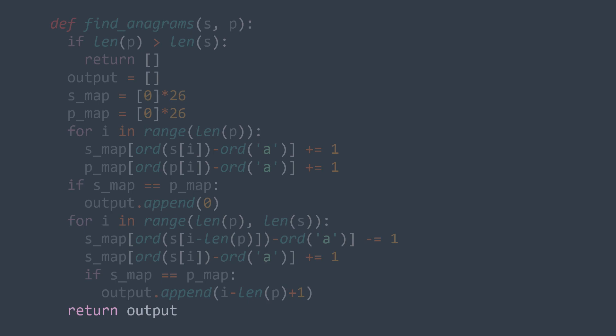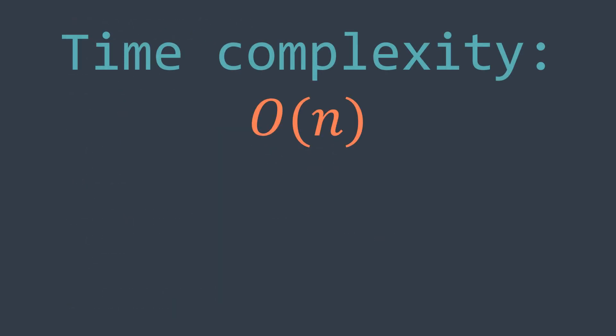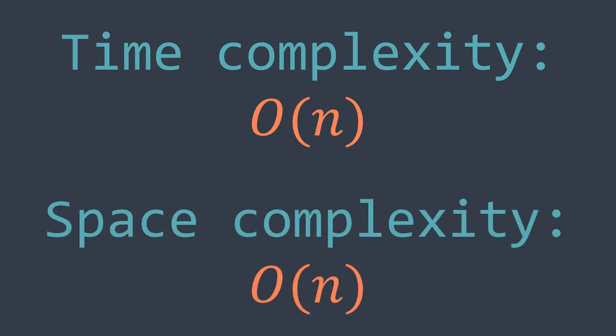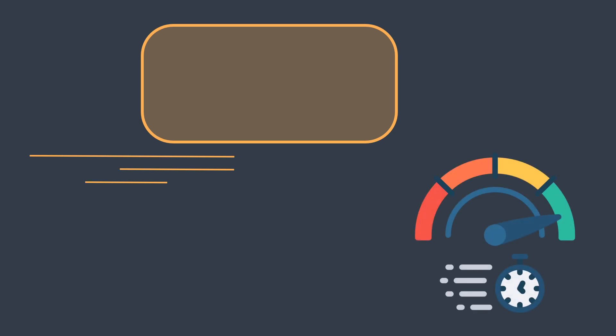For time complexity: we traverse the indexes of s, and at each index we perform O(1) work, so the time complexity is O(n) where n is the length of s. For space complexity: even though smap and pmap have a constant number of elements, we are using extra space for the output array, so the space complexity is O(n). I hope you understood how we use the sliding window technique to solve this problem and optimize the solution. Comment below what you thought, and see you in the next one.